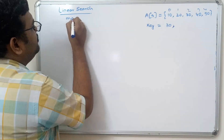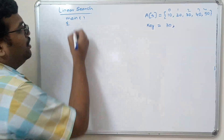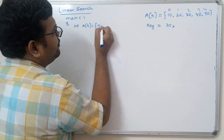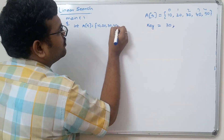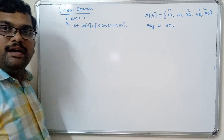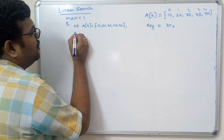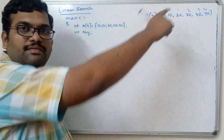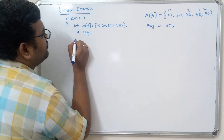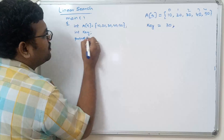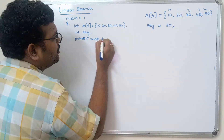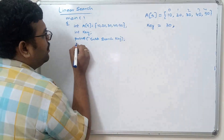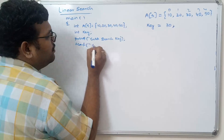In the main function, declare an array with five elements. I am declaring at compile time using direct initialization. Now declare one search key — that is the value we have to find in the group of elements. Write a prompt to enter the search key, then use scanf with %d to read the key value.